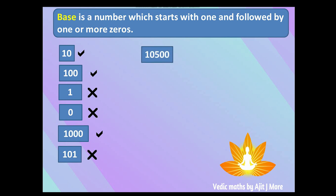10500 is not a base. 2000 is also not a base. But 10000 is a base — yes, it starts with one and is followed by zeros.